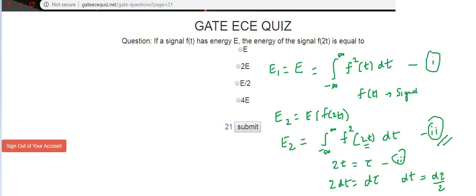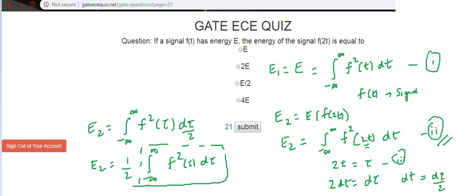This equation 2 will become E2 is equal to minus infinity to infinity, instead of F square of 2T, let's represent it as F square of tau times dt. So dt is d tau upon 2. Let's take this constant 1 by 2 out of the integral. We get minus infinity to infinity F square of tau dt. This term, that is minus infinity to infinity F square of tau dt, is similar to the one which we defined here.